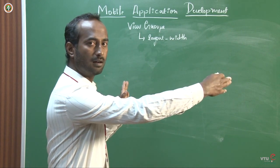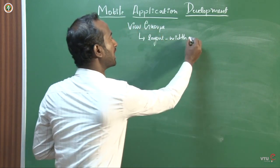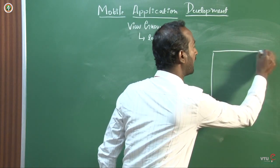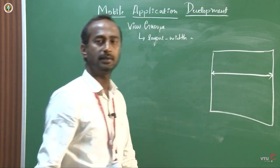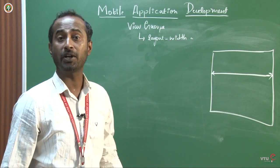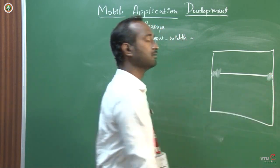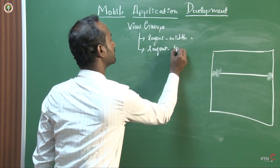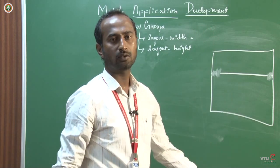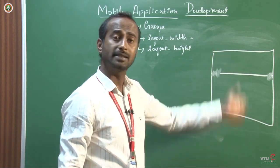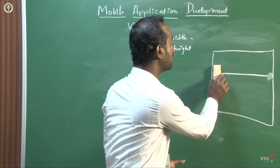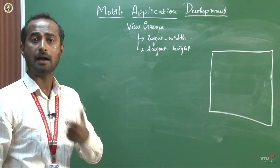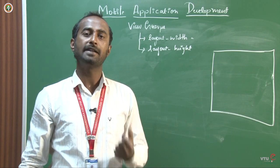The first important feature is layout width — the width of the layout or screen. We have two options: 'wrap_content' and 'match_parent'. Match parent means you want to occupy the whole screen width. Wrap content means you only want as much width as the content requires. The second feature is layout height, which similarly has two options: match parent or wrap content. These two features apply to both views and view groups.